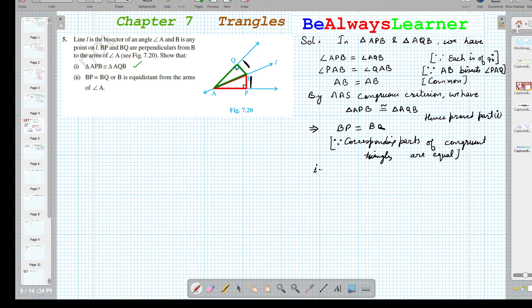That is, we can say if they are equal, then the point B is equidistant from the arms of angle A. This proves part two also. That is how we can solve these kinds of problems.